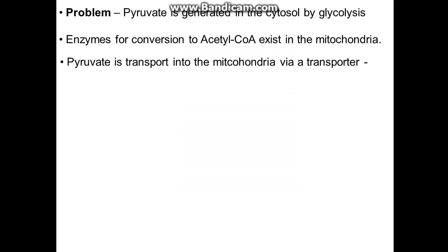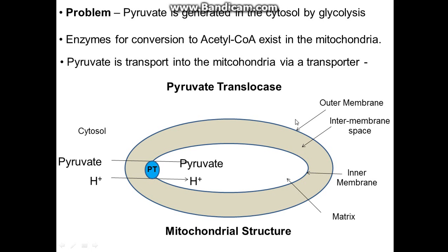A major problem is that pyruvate is generated in the cytosol via glycolysis, but the enzymes for conversion to acetyl-CoA exist inside the mitochondrial matrix. So we need a way to get pyruvate into the mitochondrial matrix from the cytosol. We do this by using a membrane-bound protein called pyruvate translocase, which transports pyruvate along with one proton into the mitochondrial matrix.